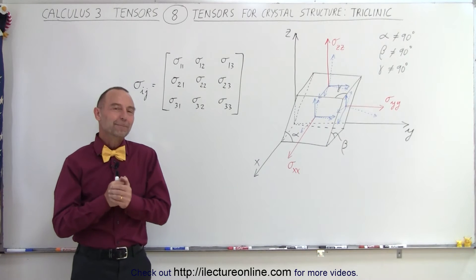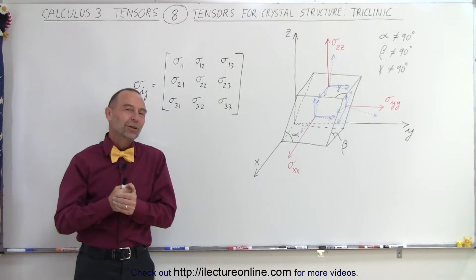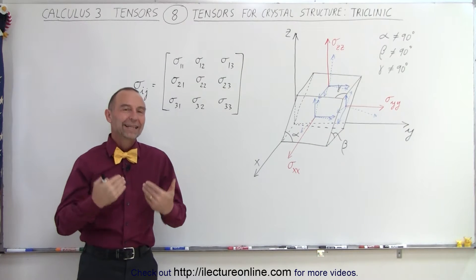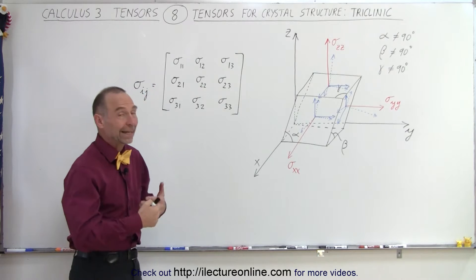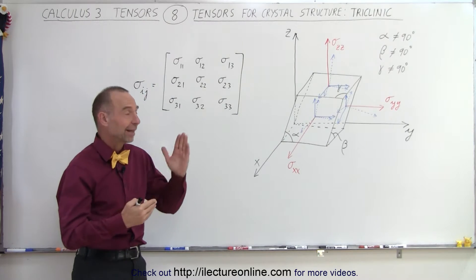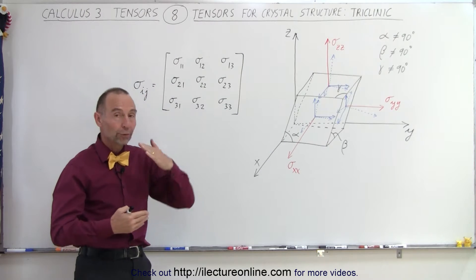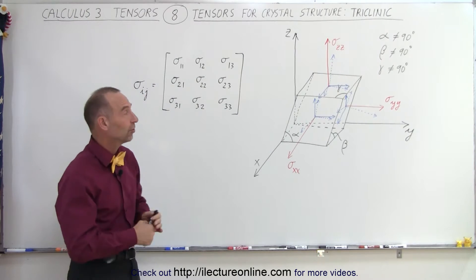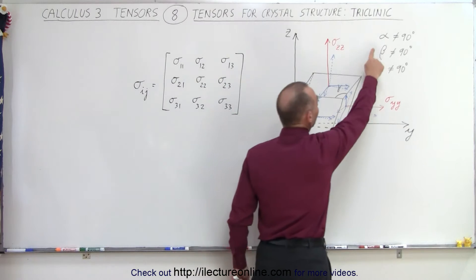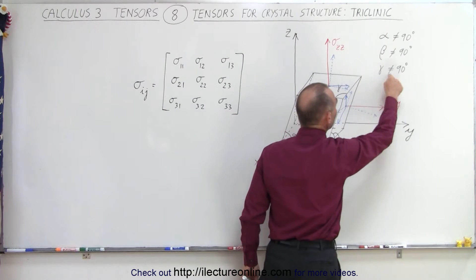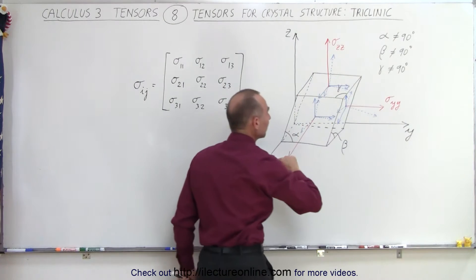Welcome to our lecture online. Now let's take a look at the triclinic crystal structure. Triclinic means that it's leaning in all three directions, which means that none of the angles alpha, beta, or gamma are equal to 90 degrees.